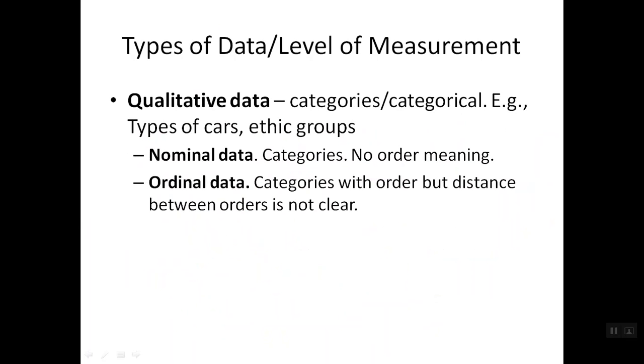Nominal data represents different categories, but different categories are equally just meaning names or labels. It doesn't carry any weight or order. Ordinal data is categories with order, but the distance between orders is not clear.